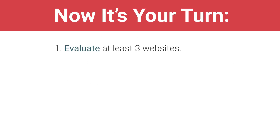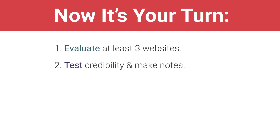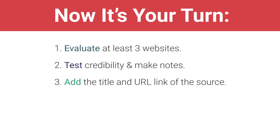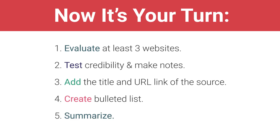Now it's your turn. Evaluate at least three websites returned in your basic or advanced Google search. Take time to test each site for credibility and record the new information in your Research Notes document. Type the title of the source and link the URL, then create a bulleted list for your notes. Summarize information or put quotation marks around direct quotes. Then move on to the next video where you'll write a short paragraph about what you learned about these sources.